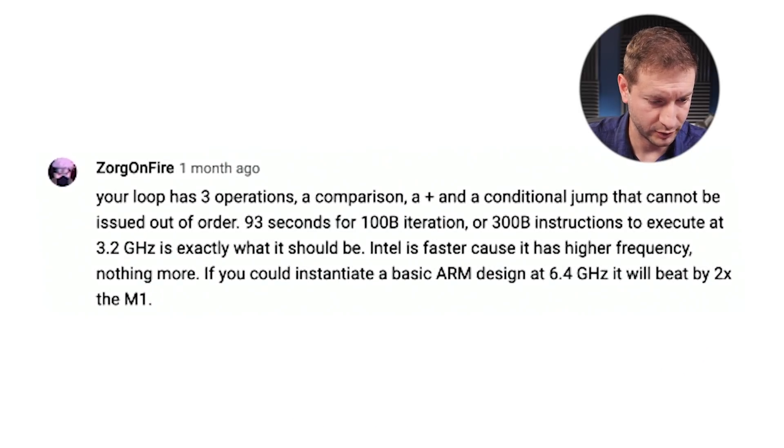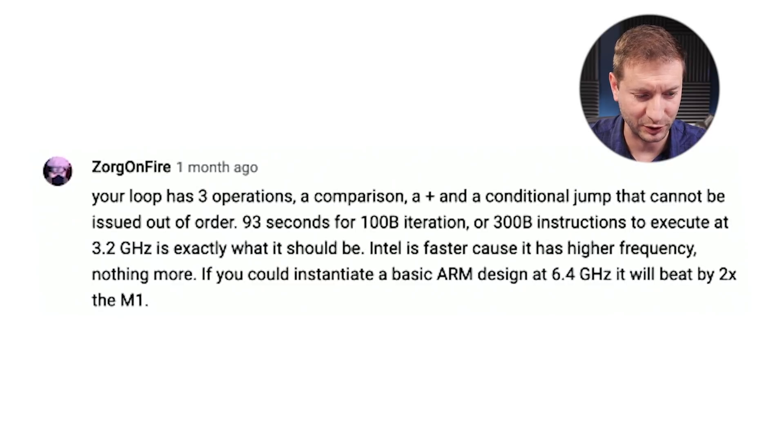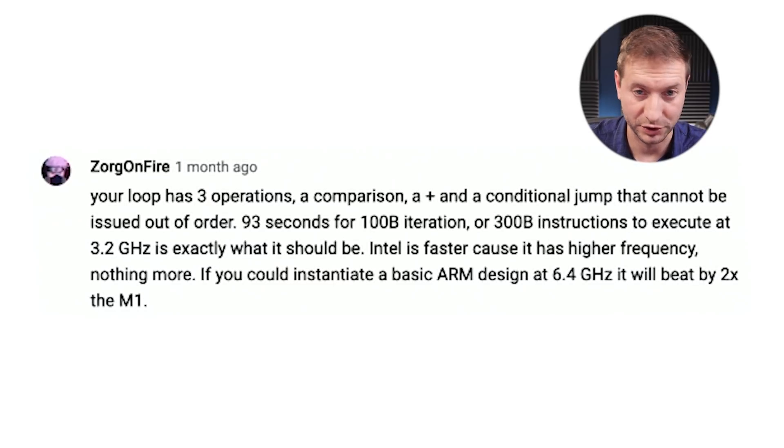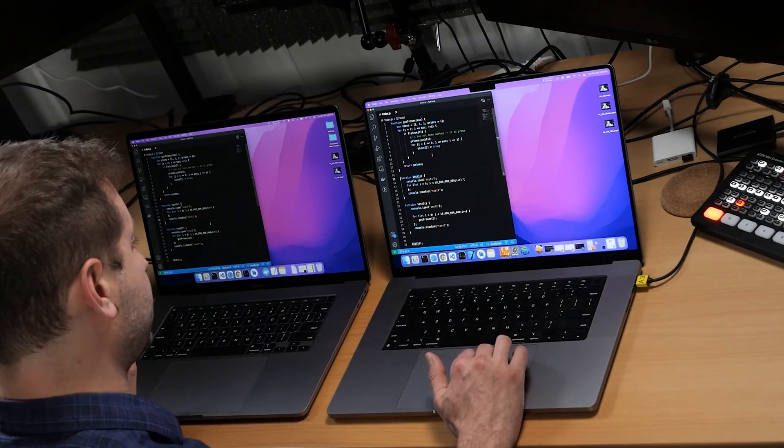Here are some suggestions from folks in the comments. Zorg on Fire says: your loop has three operations — a comparison and a conditional jump that cannot be issued out of order. 300 billion instructions to execute at 3.2 gigahertz is exactly what it should be. And Casper S says: I'm going to say it's a matter of frequency — in general, the M1 Pro Max can do more in one clock cycle than Intel. So this is what we're going to test now.